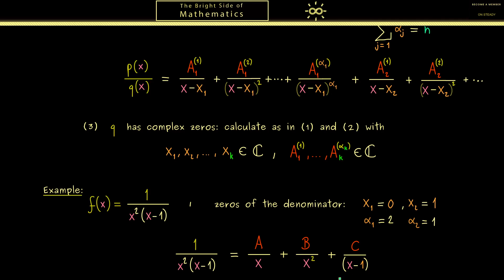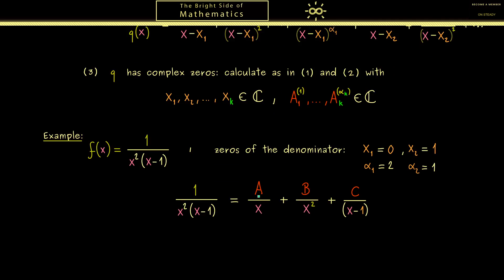And now we reach the point that I can explain how we can calculate the coefficients A, B and C. The first step is that we multiply on both sides with the denominator q. When we do this naturally all the fractions will vanish. Hence everything will look much nicer.